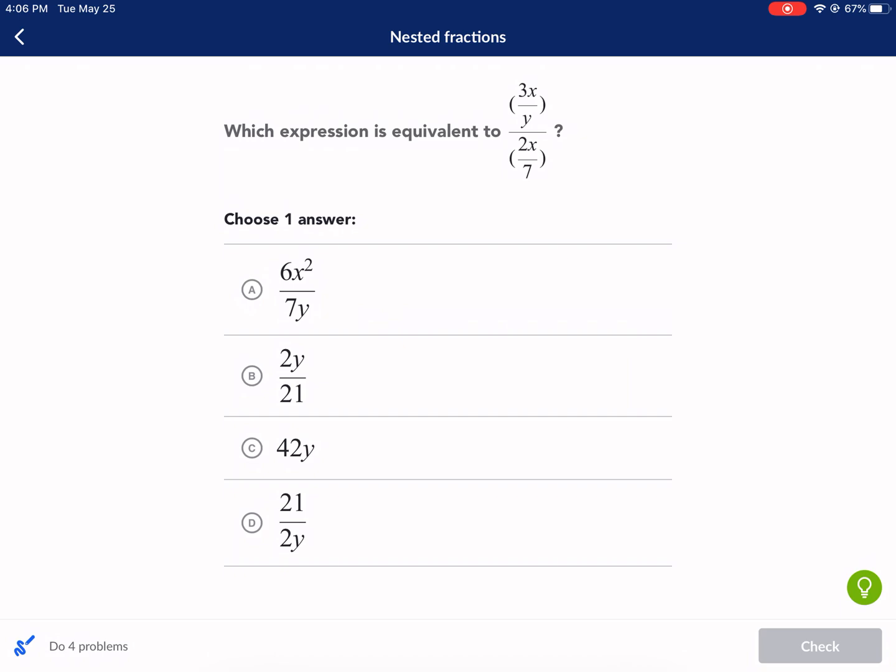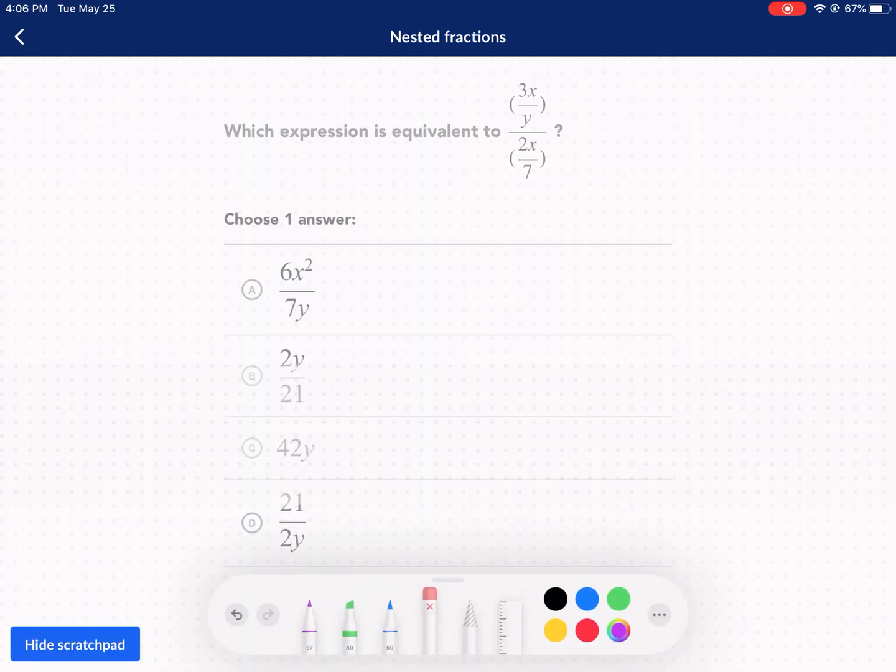With complex or nested fractions, basically what we're doing is keep, change, flip. So what we're going to do is we are going to keep the top, so I'm going to highlight the top. You're going to keep the top, you're going to change the divide sign, and then you are going to flip the bottom number.